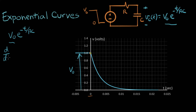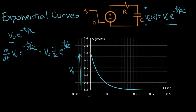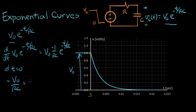The slope of a curve is the derivative evaluated at that time — at time equals zero. So let's take the derivative: d/dt of V-naught e to the minus T over RC. That equals V-naught times minus one over RC, times e to the minus T over RC — that's the derivative for all time. Now we evaluate it at T equals zero. We get minus V-naught over RC, and e to the zero is one. So the slope at time equals zero equals minus V-naught over RC.